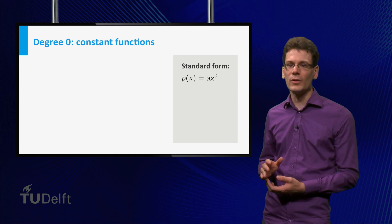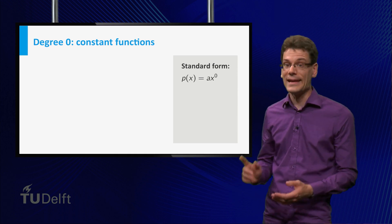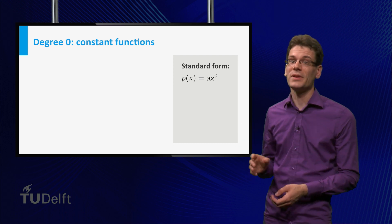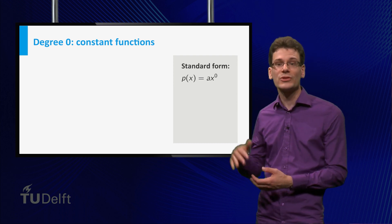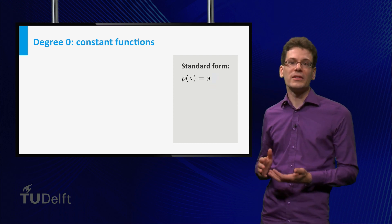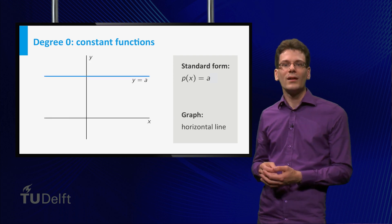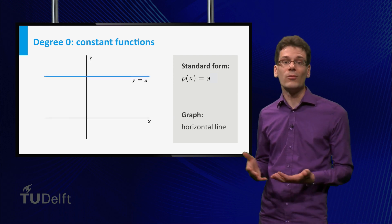The easiest non-zero polynomial functions are those of degree 0. Is that possible? Yes, we can write these functions as p(x) equal to a times x to the power 0. Now remember that x to the power 0 is just 1, so these are just constant functions. The graphs of these functions are simply horizontal lines.